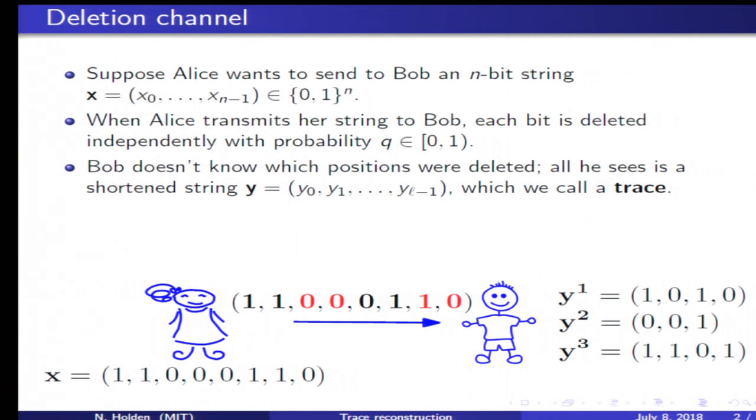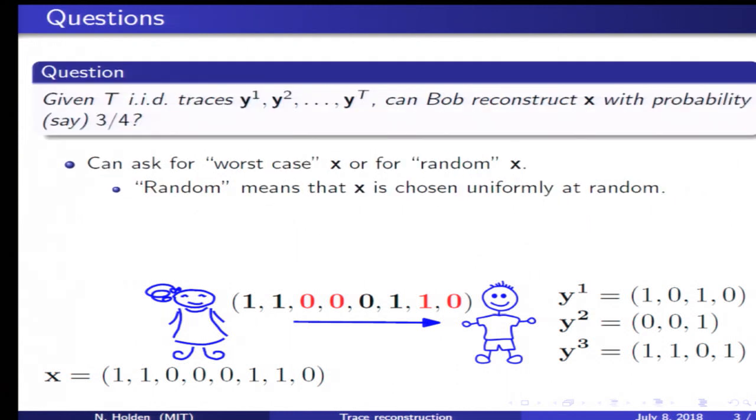They have done this a third time, and so on. Bob wants to reconstruct the original string X. The question we want to answer is, how many traces does Bob need in order to reconstruct the string X?